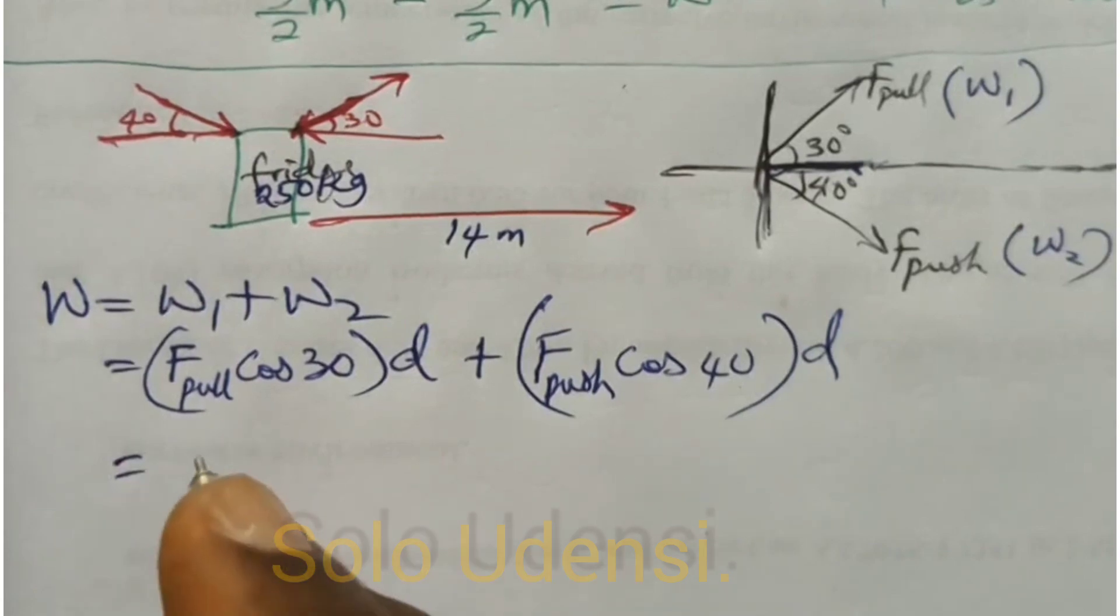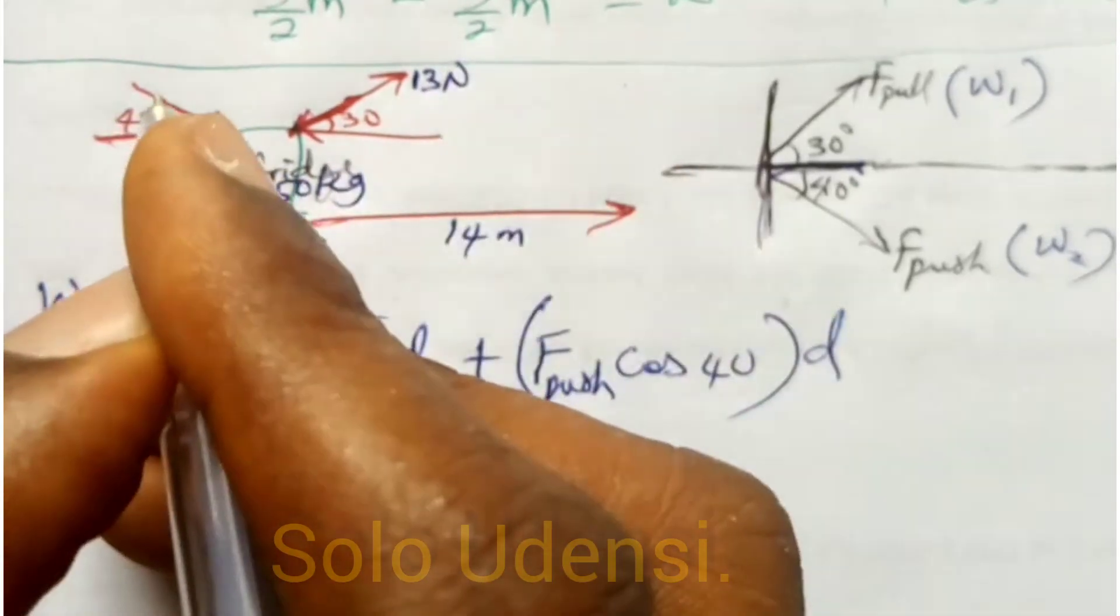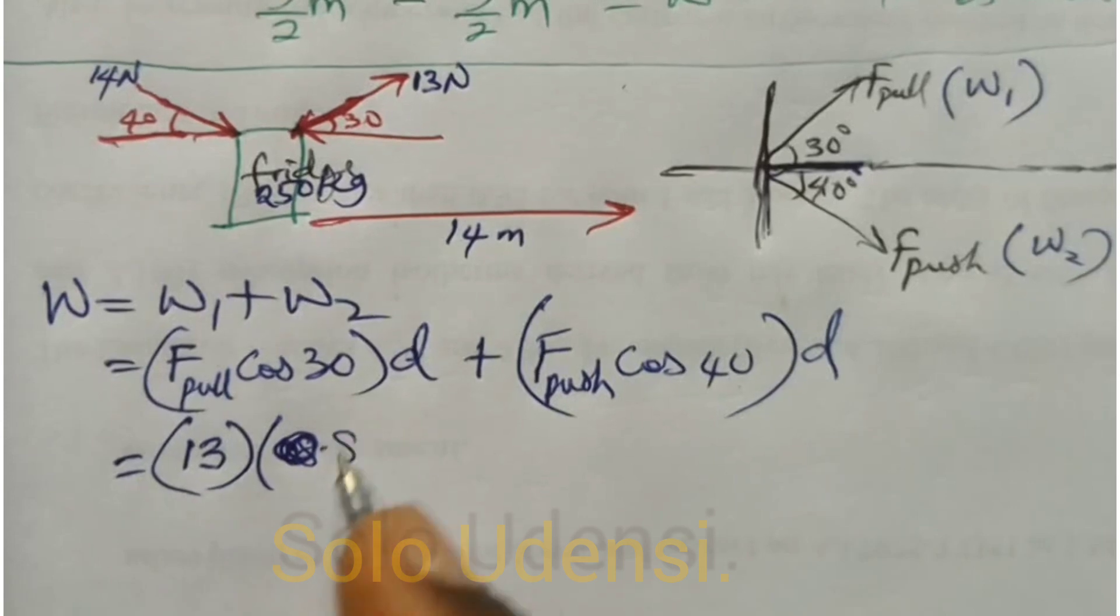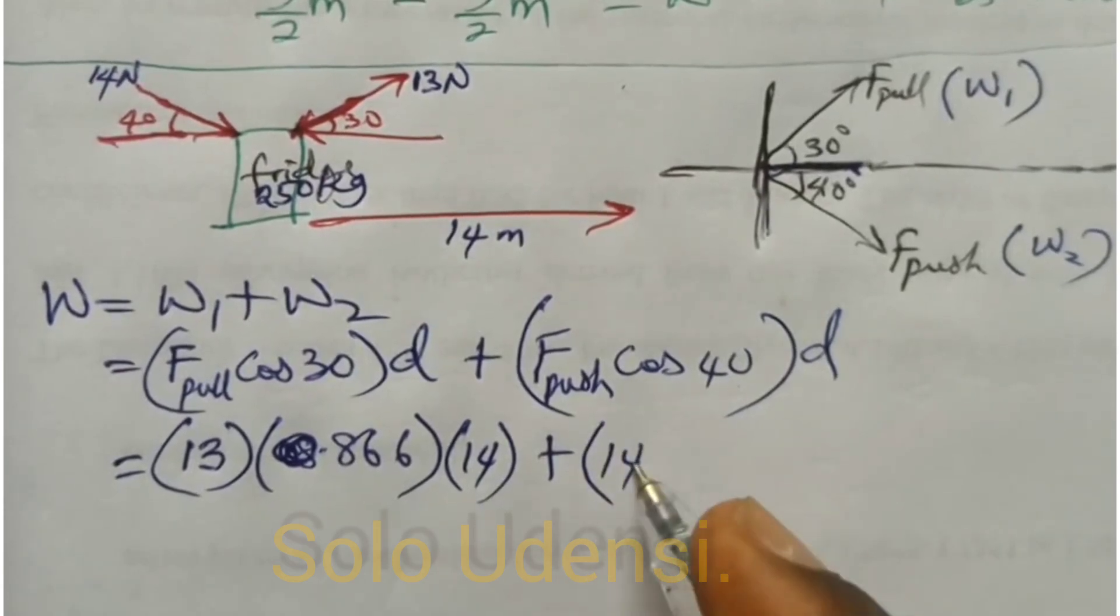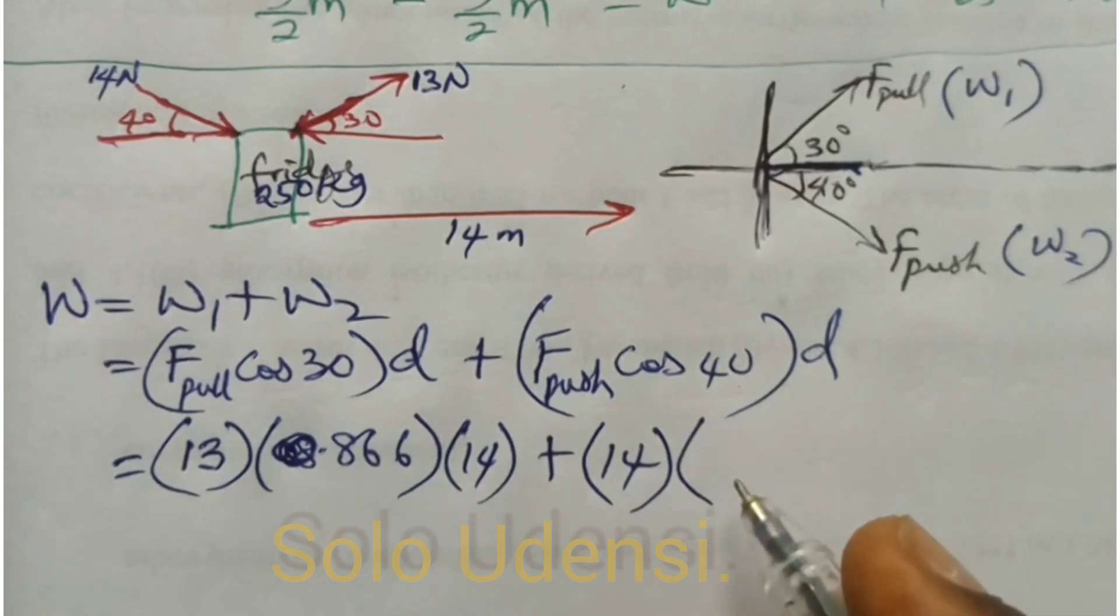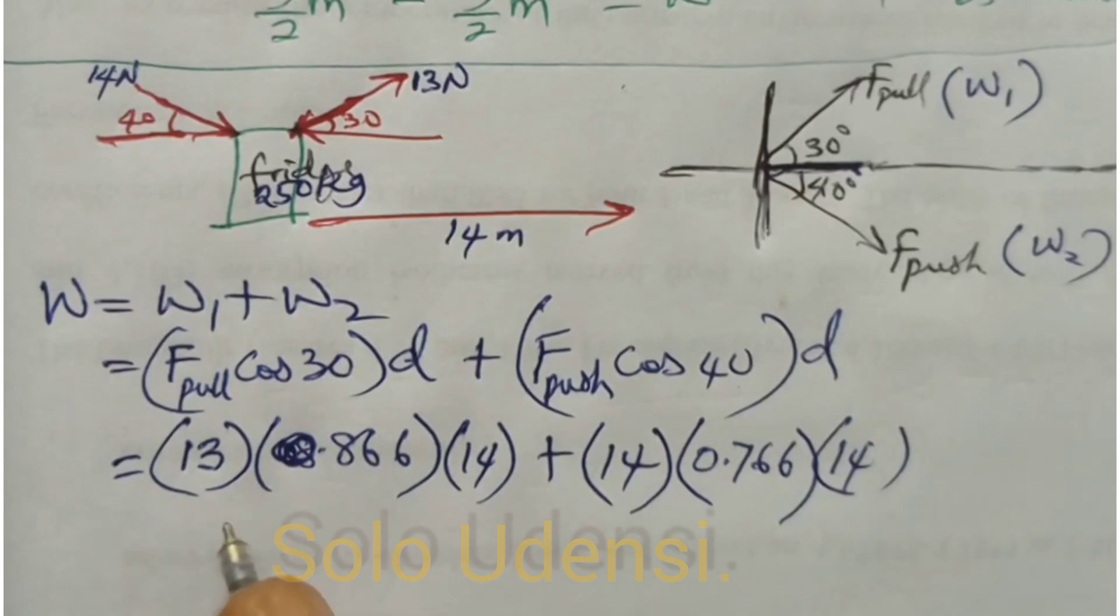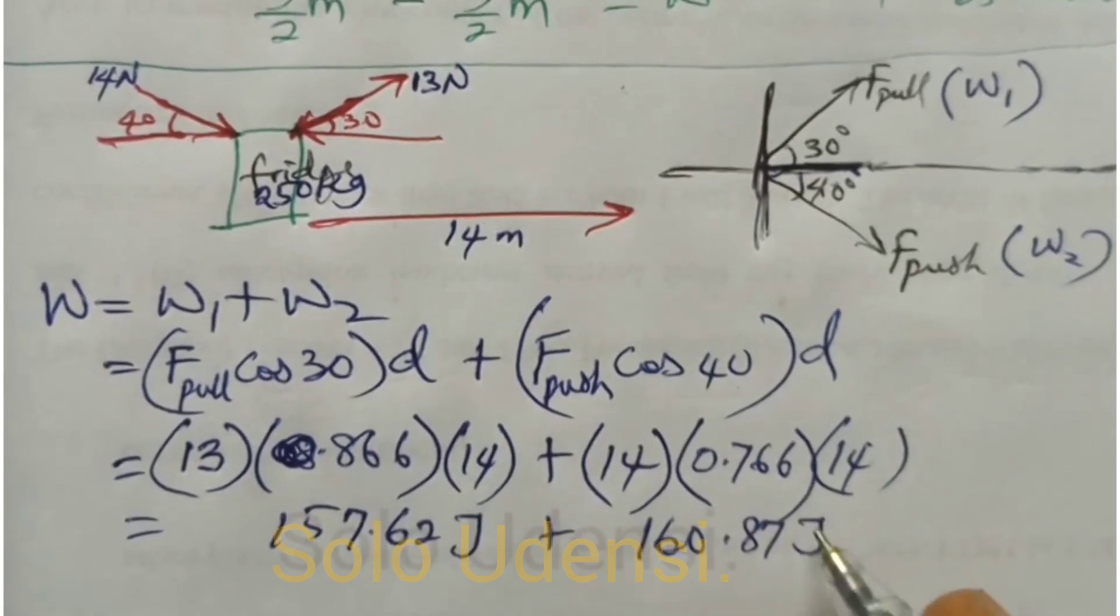Let's say that the force that this guy is pulling with is 13 newton and the force that this guy is pushing with is 14 newton. So if that is the case and you are able to identify them in your problem, then you are good to go. So it's 13 times cos 30 is 0.866 times 14 plus Fpush, 14 cos 40 is around 0.766 times 14. So if you do the math you get this equal to 157.62 joule while this one is 160.87 joule.